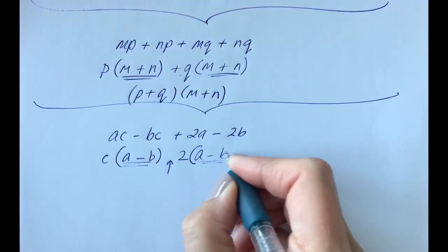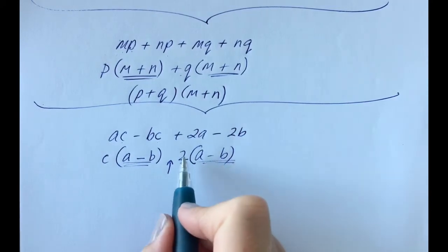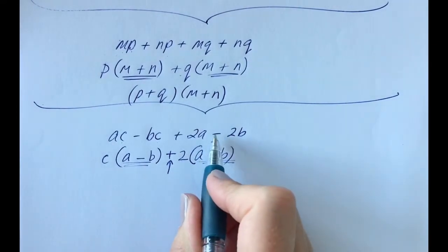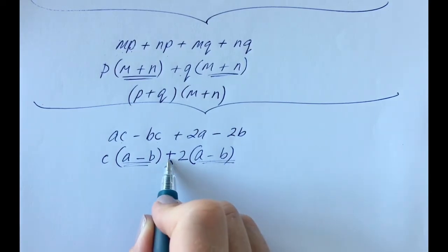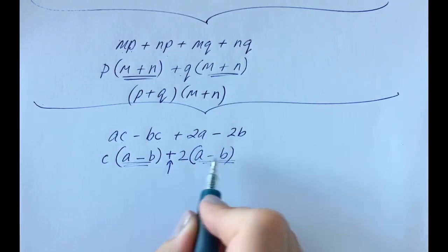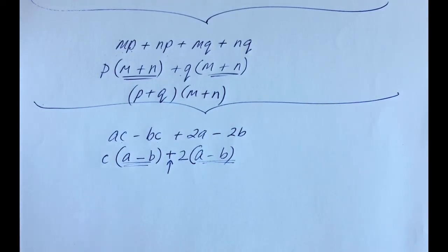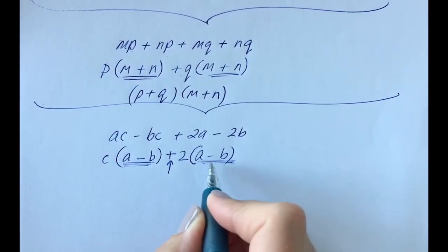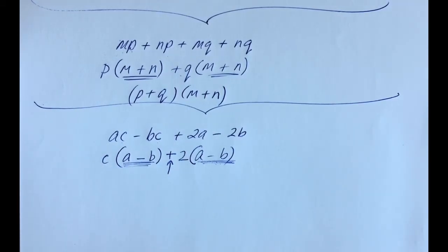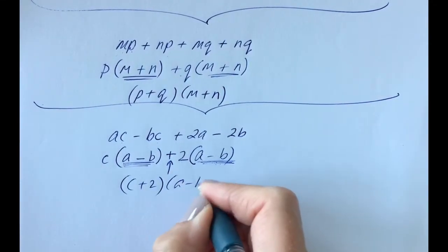Then fill in the bracket based on the first bracket — they must match because they've got to repeat. So fill that in, then figure out the sign. We need positive 2a, so that sign must be a plus. Let's double-check: plus 2 by minus b — when you multiply signs that are different you always get a minus, and 2 times b is 2b. So yes, that works. What's separated is your first bracket, and the repeated bracket is the second.